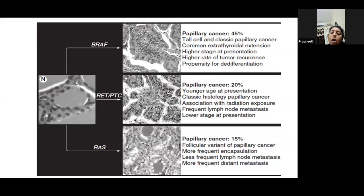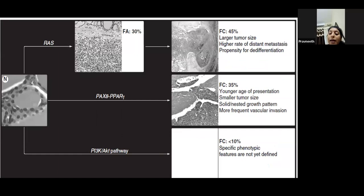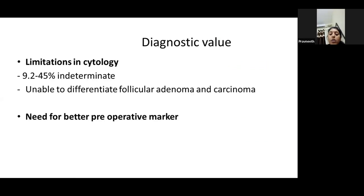These genes are clinically very important. If you find BRAF, you can prognosticate the tumor and increase surgical aggressiveness — not only total thyroidectomy but also nodal dissection, because BRAF causes higher stage presentation, higher rates of tumor recurrence, higher rates of extrathyroidal extension, dedifferentiation, and less radioiodine uptake. RET/PTC presents in younger patients with classical papillary carcinoma and frequent lymph node metastases but at a lower stage. RAS (common in follicular carcinoma) causes more distant metastases. PAX8/PPAR and PI3K pathway mutations in younger patients cause more frequent vascular invasion with small tumor size.